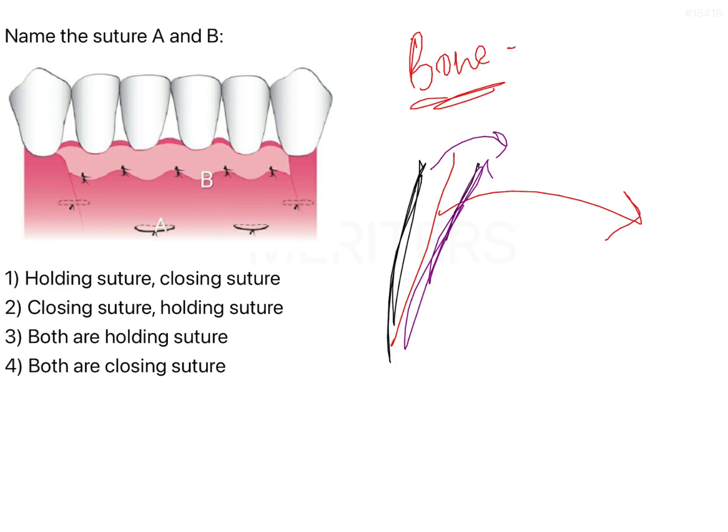After whatever procedure has been done with the bone, we place the flap back along with the periosteum.